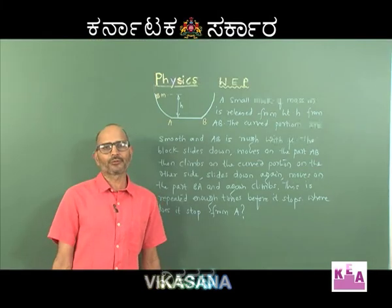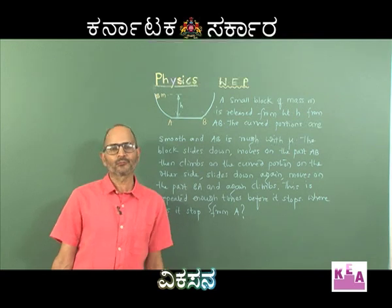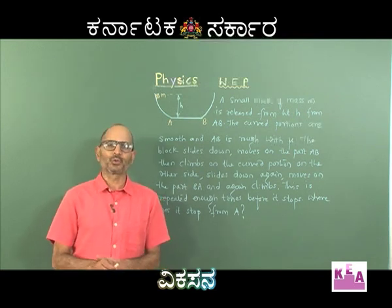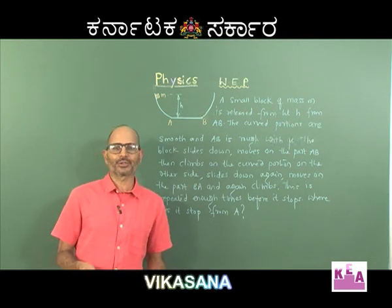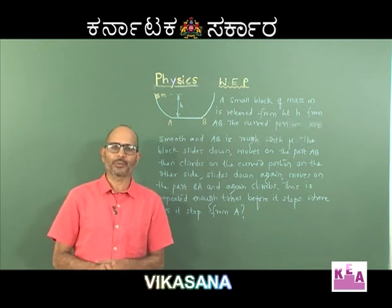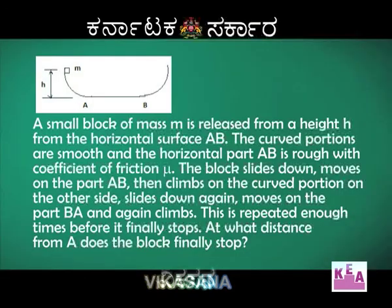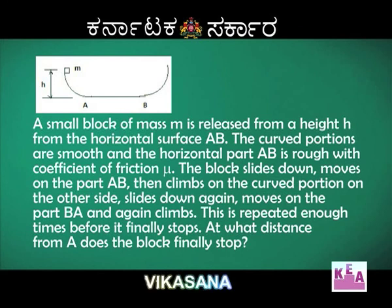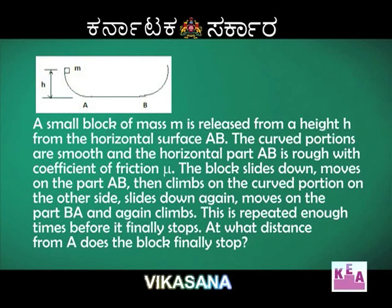There is one more problem here, similar to the one we solved previously — referring to conservative force, its nature and its non-dependence on the path. A small block of mass M is released from a height H taken from the surface AB. There are two curved portions which are smooth, and AB itself is rough with the coefficient of friction given to be mu.